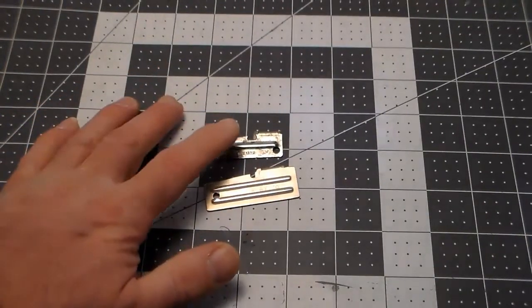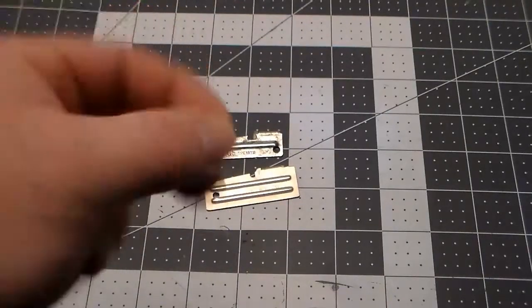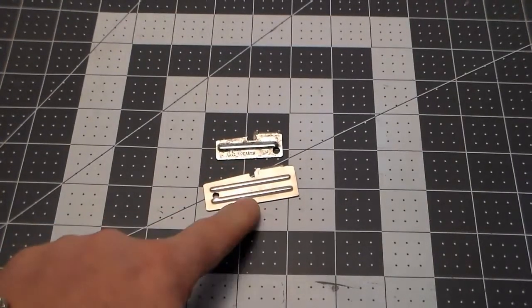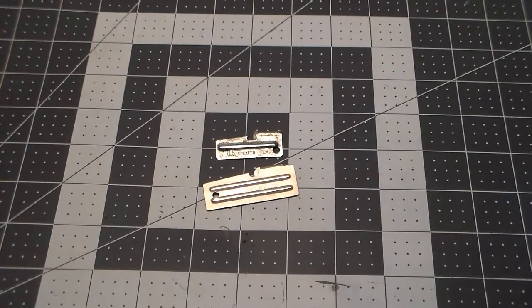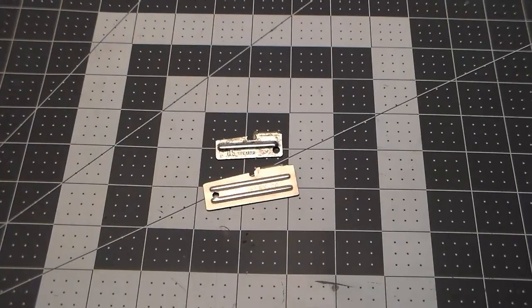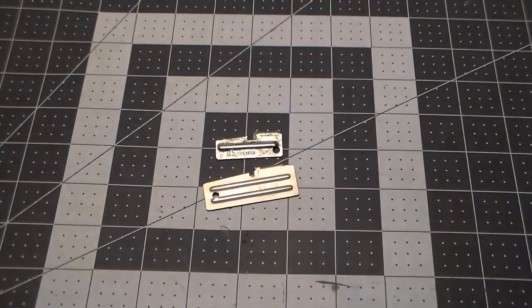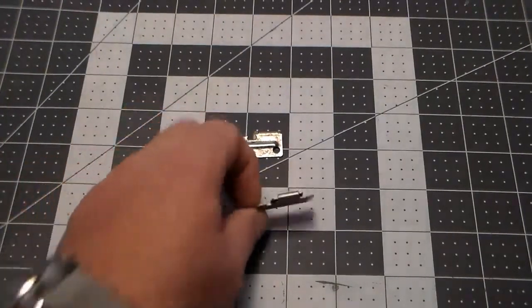One story is that the P-38 takes 38 repetitions of this movement around the can to open a C-rat can. And the P-51, which was issued for mobile kitchens, took 51 rotations around a number 10 can. Think of a large coffee can to open it. That's one story. The other story is they were called 38 and 51 due to their length, which seems to make a little bit more sense to me.